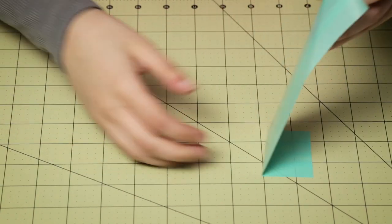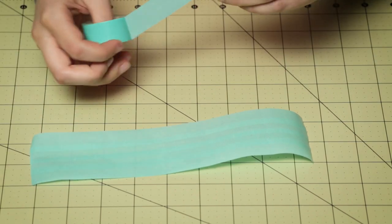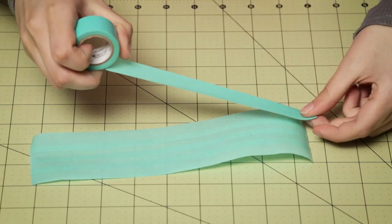Now we're just going to peel this up off the mat and then we're just going to cover the backside.